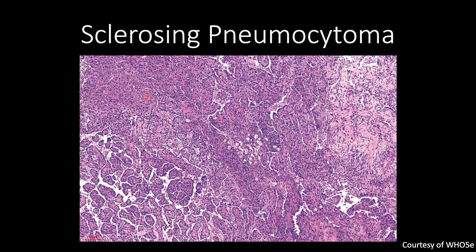Here's a low-power image of a sclerosing pneumocytoma, courtesy of the Hu 5th edition, where you have three architectural patterns: sclerotic, solid, and papillary.